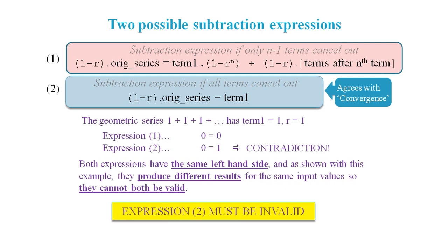As we've seen here, expression 2 results in a contradiction. So we have to conclude that the argument in the 10x minus x proof that all the trailing terms cancel out is an invalid argument.